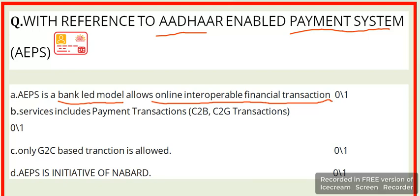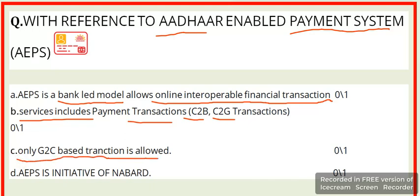Option B services include payment transactions: C to B (Consumers to Business) and C to G (Consumers to Government). Option C allows only G to C (Government to Consumer) based transactions.